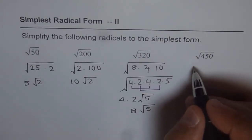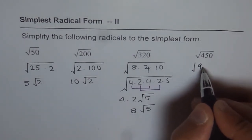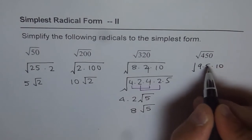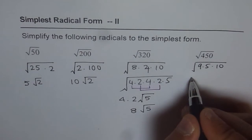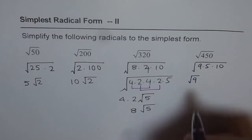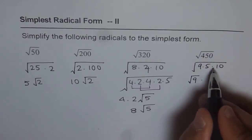Now, 450. 450, you know, 9 times 5 is 45 times 10 is 450. You know, 9 is a perfect square, no problem. Let's keep 9 separate. And then we are left with 5 times 10.